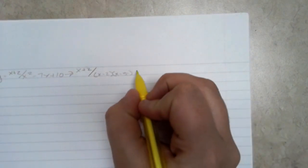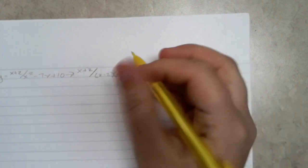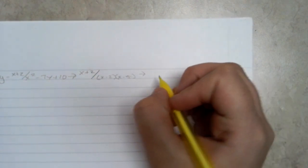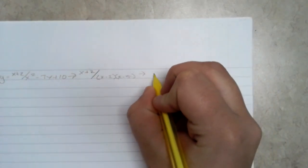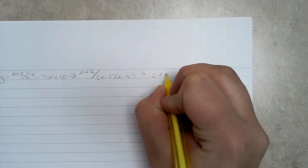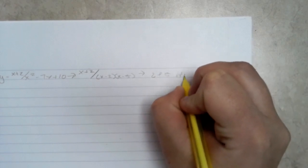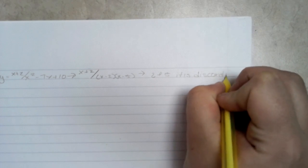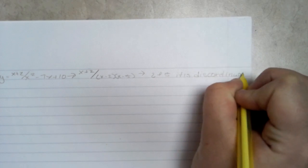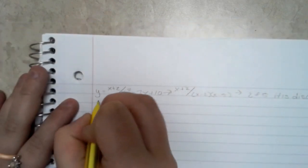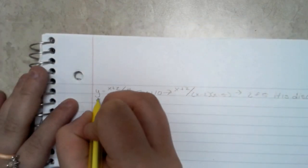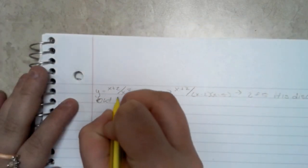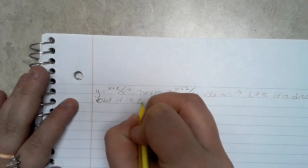So with that, at positive 2 and 5 it is discontinuous.